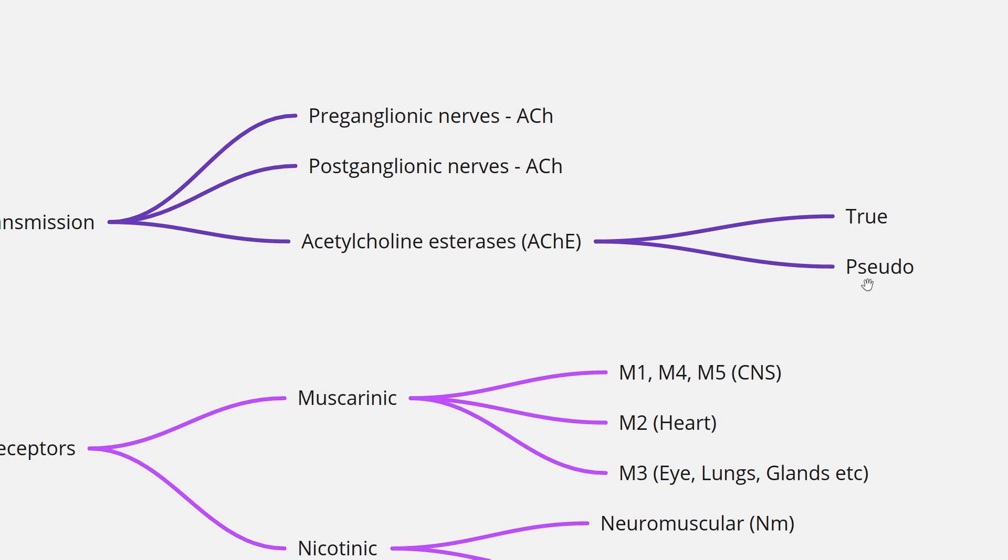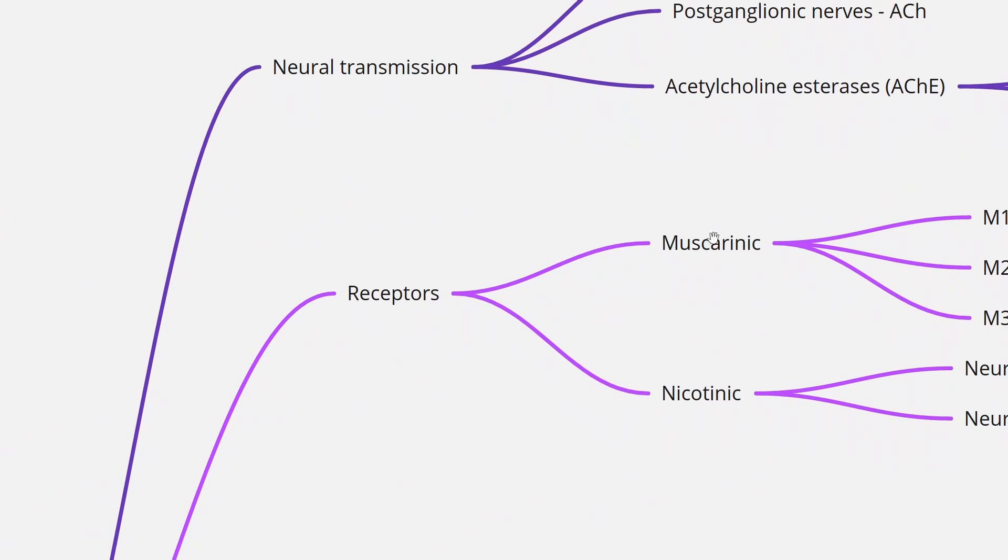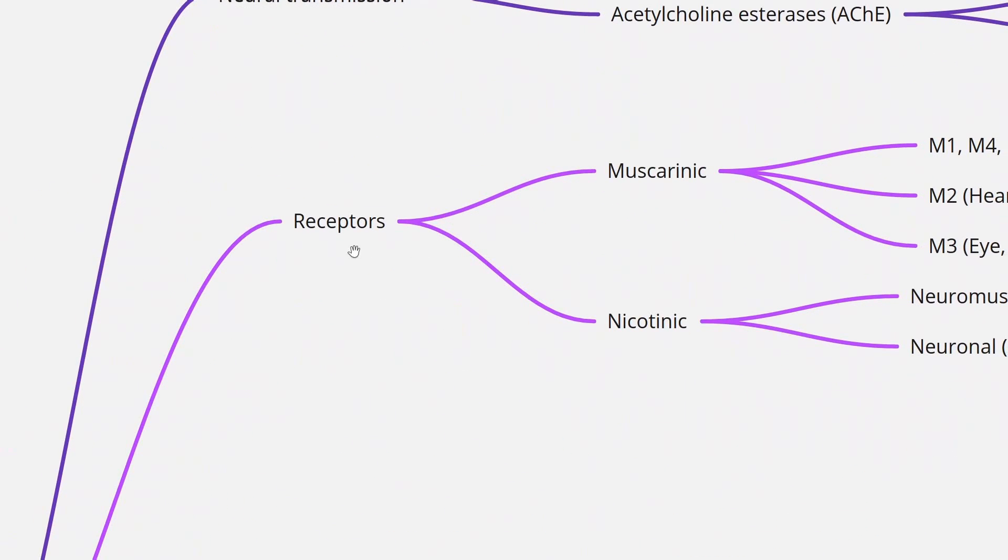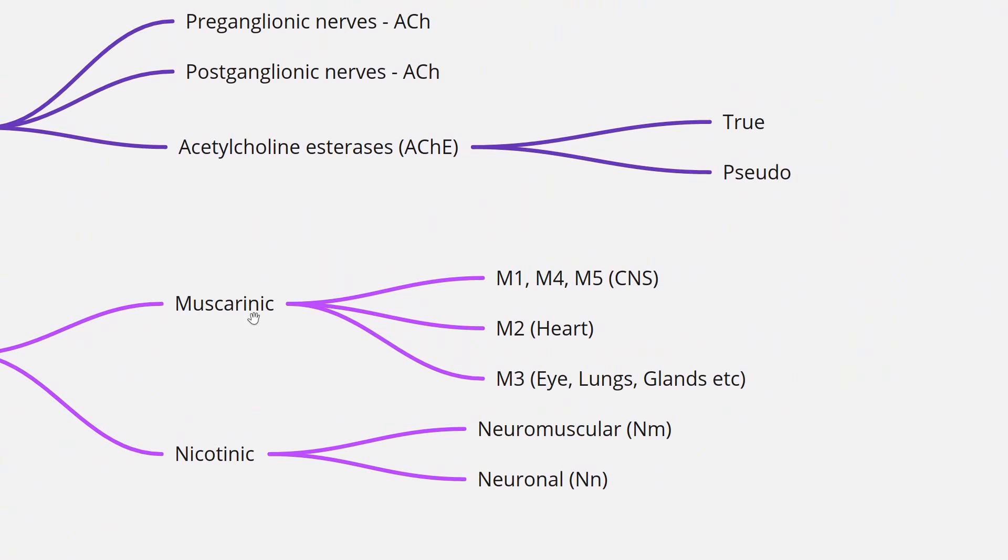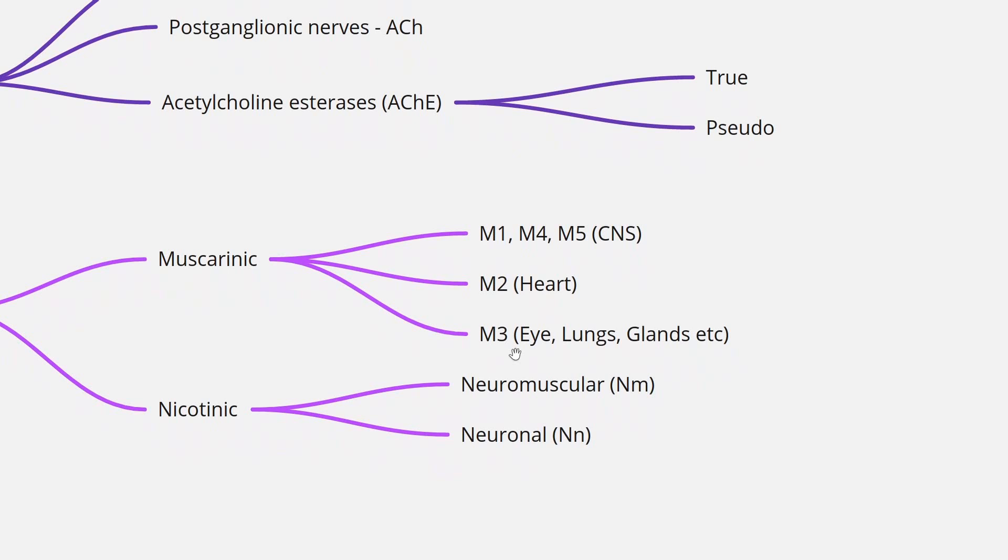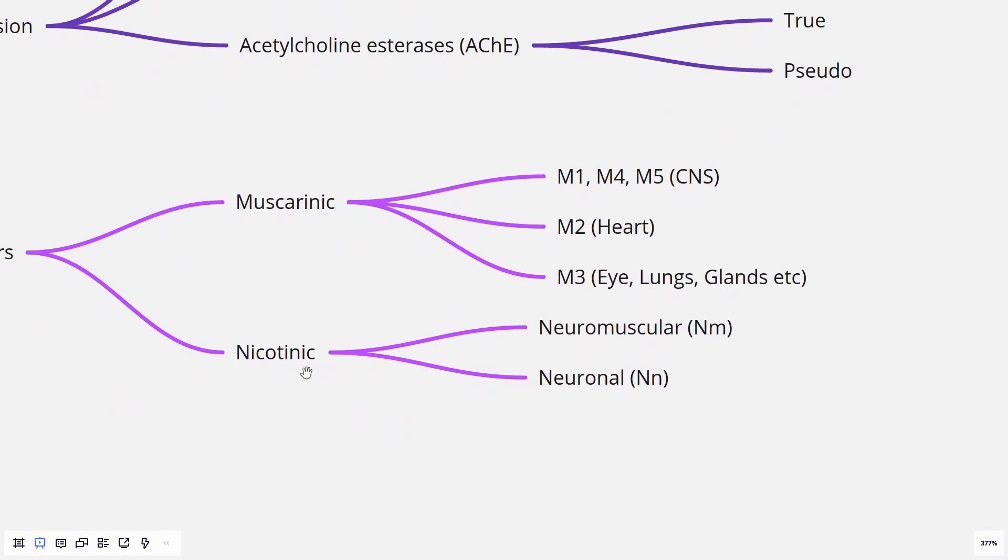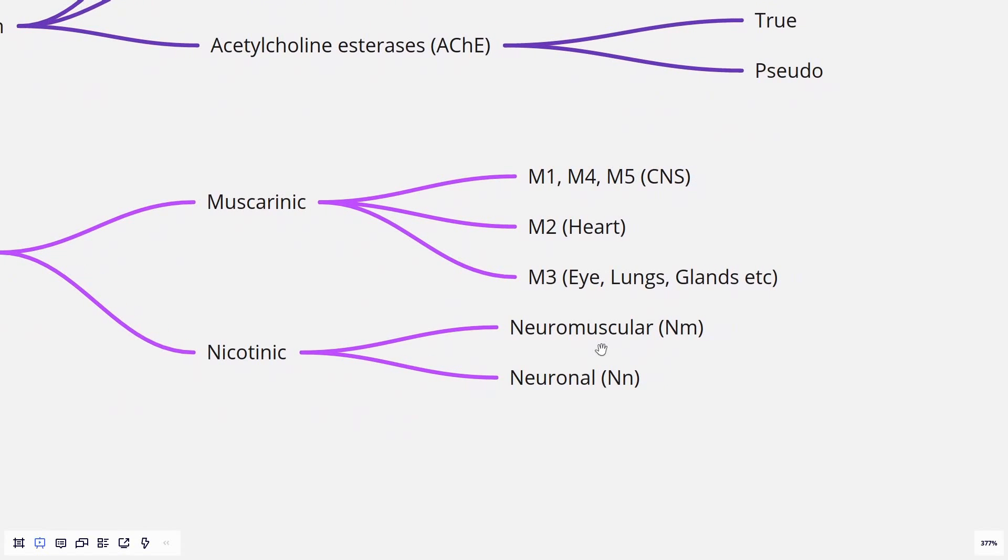Next, receptors. Acetylcholine acts on two types of receptors: the muscarinic receptors and the nicotinic receptors. The muscarinic receptors are of five types, M1 to M5. M1, M4, and M5 are present in the CNS and neuronal junctions. M2 is present predominantly in the heart. M3 is present in the eyes, lungs, glands, and other organs. The nicotinic receptor is of two types: we have the neuromuscular receptor, which is present in the muscle end plate, and the neuronal receptors, which are present in the ganglion.